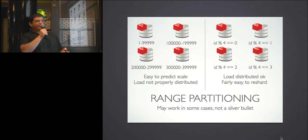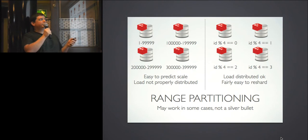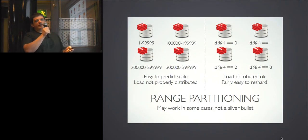For range partitioning, you could say users 1 to 100,000 go here, the next 100,000 go there — it's easy to predict scale but the load is not properly distributed. Another approach: take the user ID and use modulo — load distribution is okay and it's fairly easy to reshard, but it only works if your keys have high cardinality like user IDs. Otherwise 70% of keys may end up on one instance. This is why hash partitioning is better — proper hashing algorithms give a very similar distribution for a diverse number of keys.